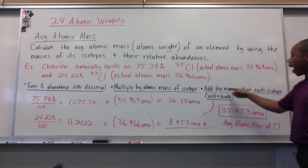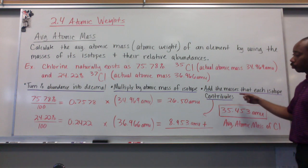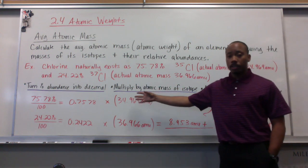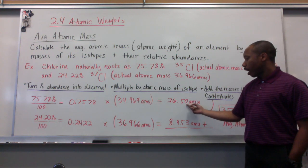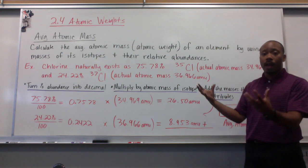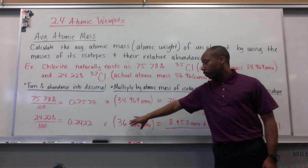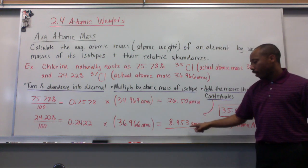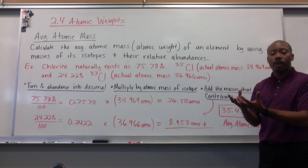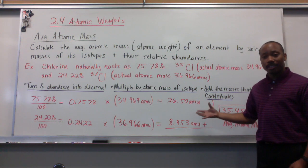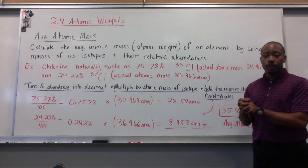Now the last step is to add the masses that each isotope contributes. Chlorine-35 contributes 26.50 AMUs to the total average mass. Chlorine-37 contributes 8.953 AMUs to the total overall mass. So we add these together to get both their contributions together.